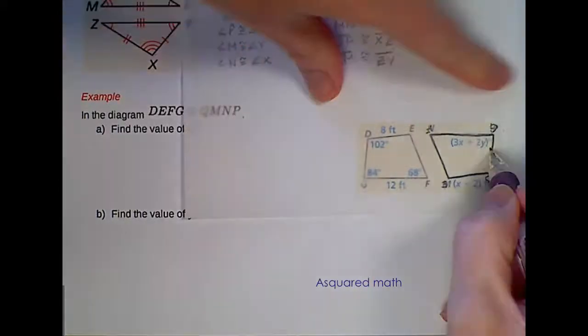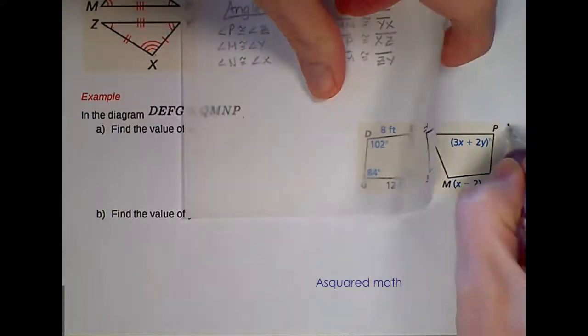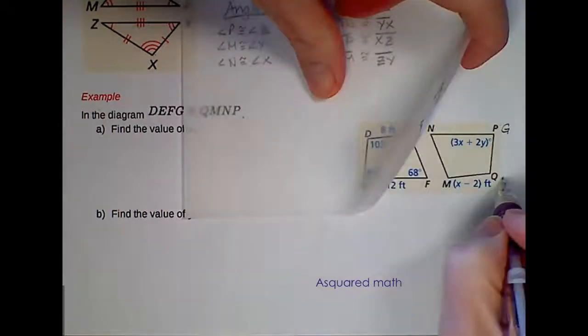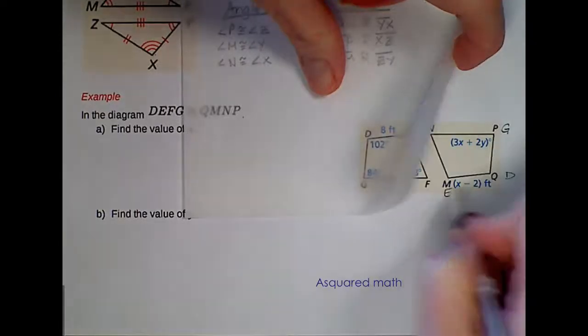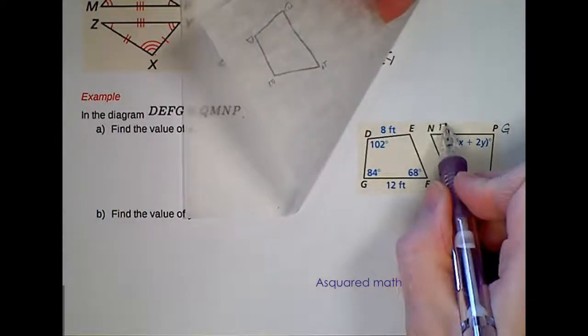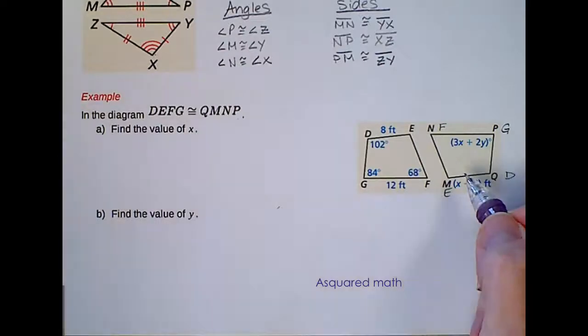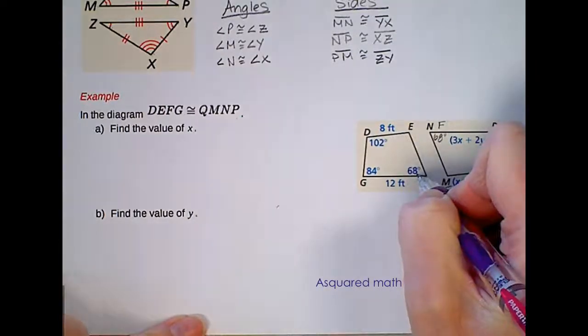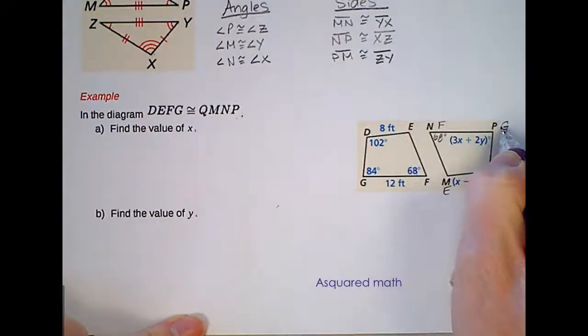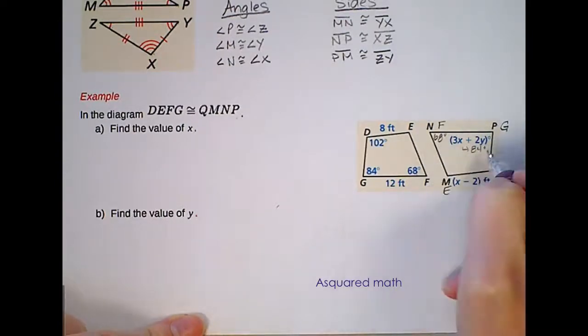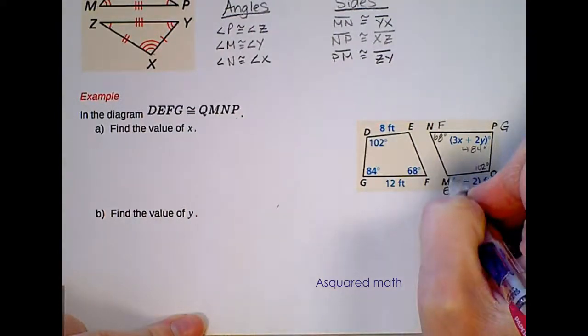Now sometimes when they're photocopied they don't line up exactly, but they're pretty close. So for this one angle G is my top right which lines up with angle P. And then I have D lines up with Q, E lines up with M, and finally my angle F lines up with angle N. So now I can see that this angle is 68 degrees. G is 84 so P is 84 degrees. D is 102 degrees and E is our unknown one here.